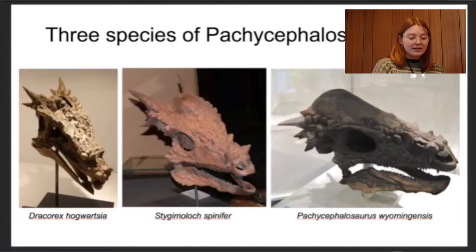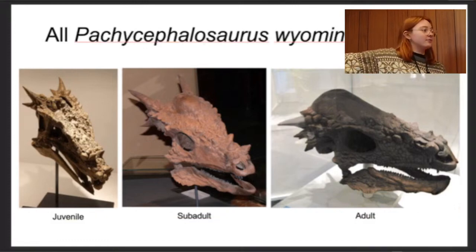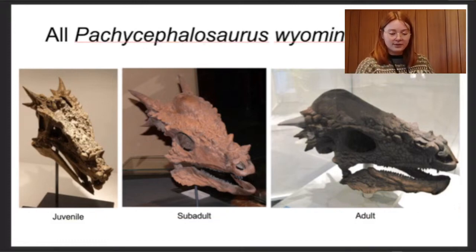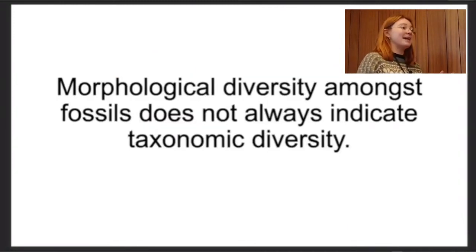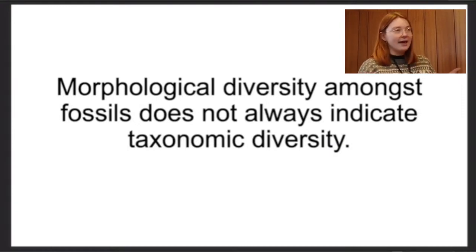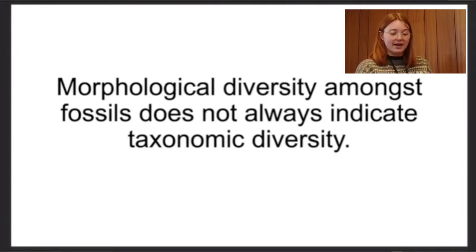So whilst previously there might have been three different species of pachycephalosaur, we now think we have juvenile, sub-adult, and adult — which massively reduces the diversity of taxa from upper Cretaceous assemblages. This demonstrates that morphological diversity among fossils does not always indicate taxonomic diversity, so why could it not be the same for sexual diversity? Animals might look very similar and you just can't tell.